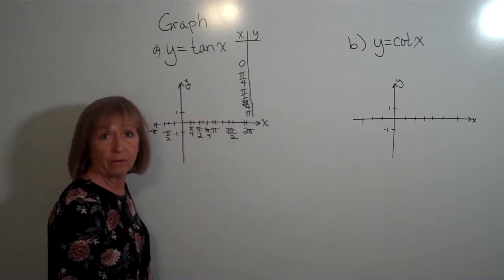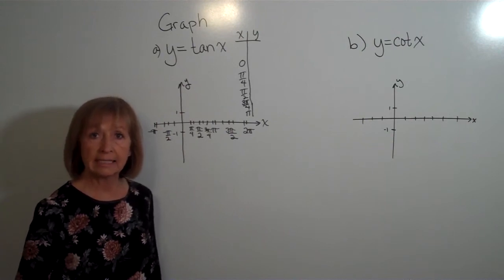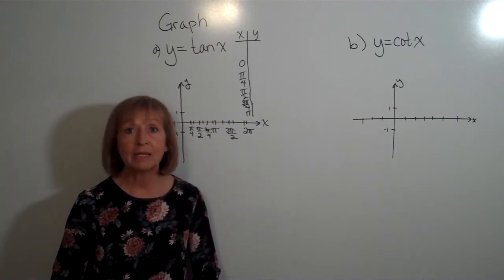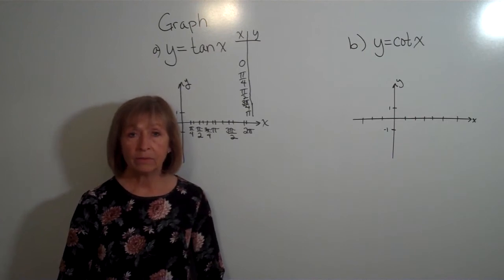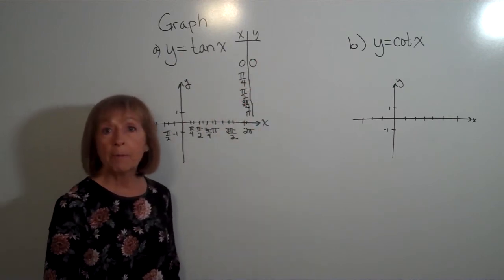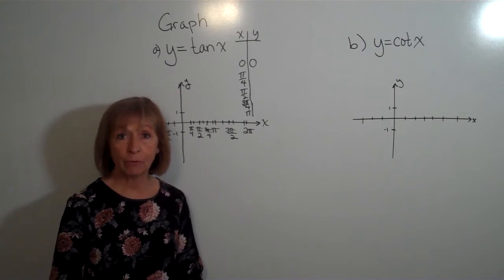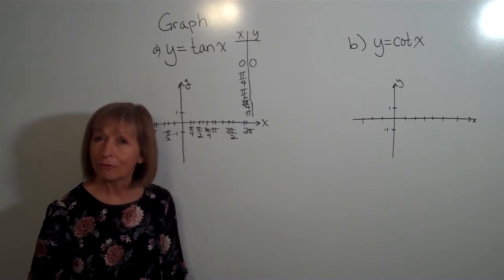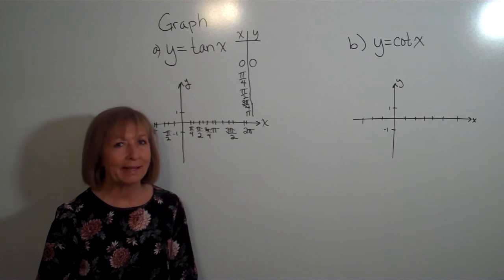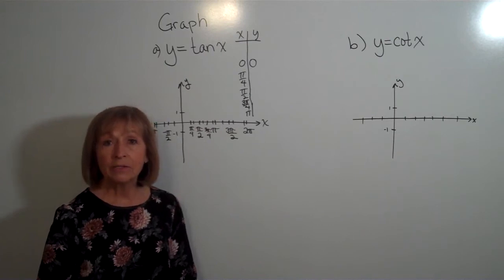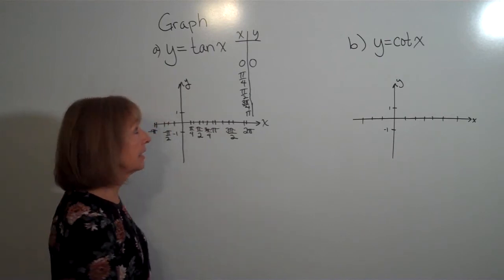The tangent of an angle is the sine of the angle divided by the cosine of the angle. So the tangent of 0 is sine 0 over cosine 0, which is 0 over 1 = 0. For pi over 4, the sine and cosine are both square root of 2 over 2, since these are 45-degree angles with equal legs. So a non-zero number divided by itself gives 1 — the tangent of pi over 4 is 1.